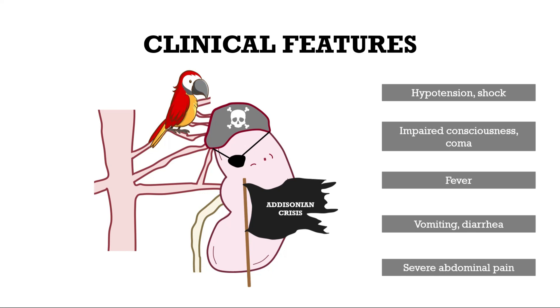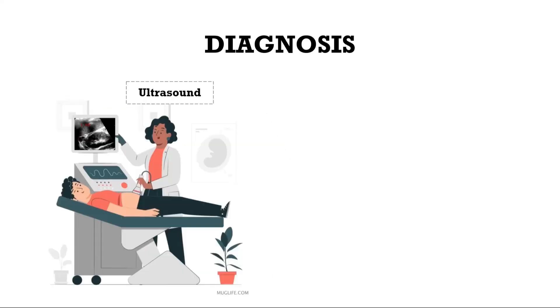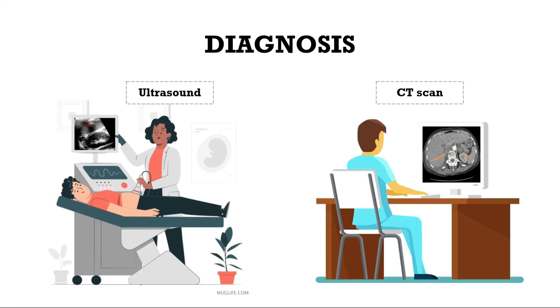As a diagnostic tool, an ultrasound can be used, in which the adrenal hemorrhage appears solid and diffusely echogenic, as well as a CT scan to identify the blood collection within the adrenal glands.